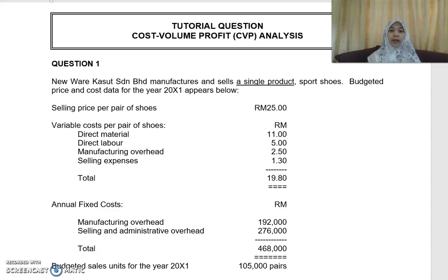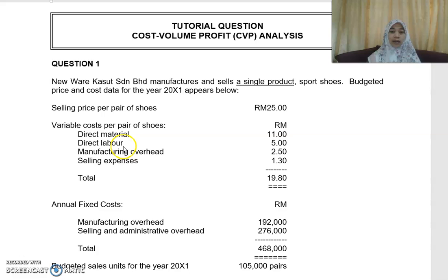Kasut Seren Berhad manufactures and sells a single product: sport shoes. The budgeted price and cost data for year 20X1 appears below. The selling price is RM25 per pair. Variable costs per pair include direct material RM11, direct labor RM5, manufacturing overhead RM2.50, and selling expenses RM1.30.